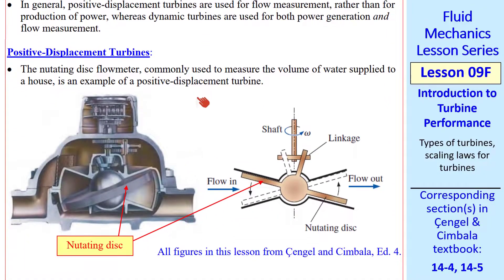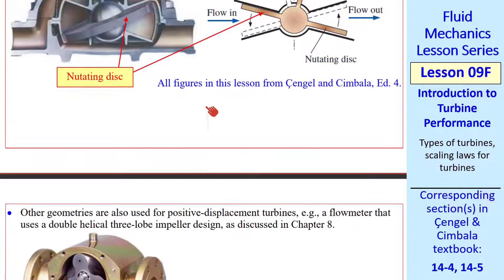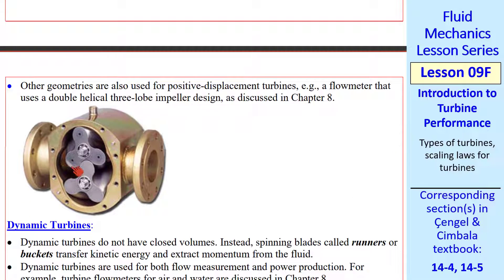Let's talk about positive displacement turbines first. This is a nutating disc flow meter that many of you may have in your house to measure the flow of water. There's a nutating disc that wobbles up and down as it rotates. There's a certain amount of volume that comes into this fixed volume or lobe, and as it wobbles and rotates, it pushes that flow out. Here's a turbine with a double helical, three-lobed impeller. The output shaft is not producing power — it's a flow meter, so the shaft turns a counting device or tachometer.